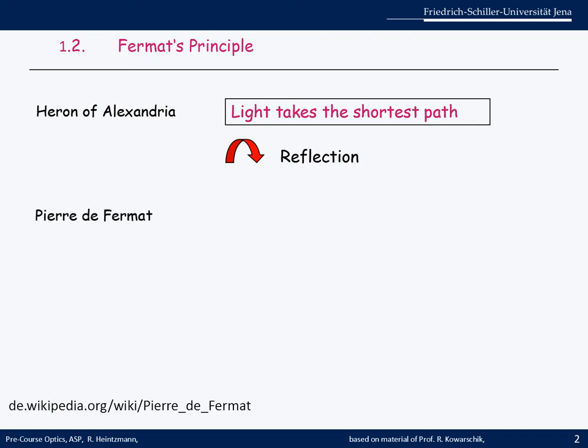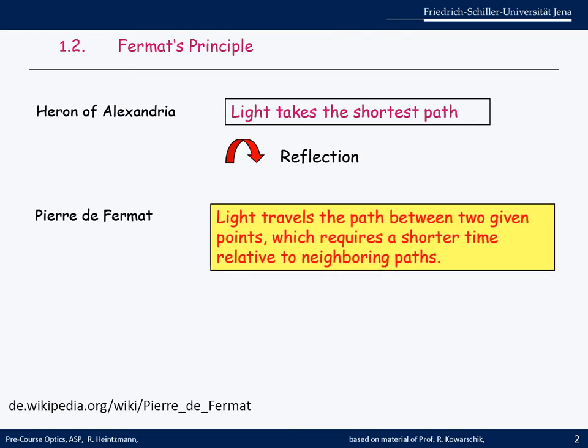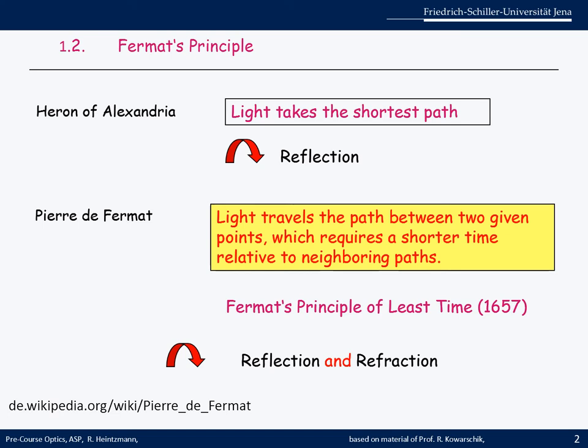Pierre de Fermat made this more precise by stating that light travels the path between two given points which requires the shortest time relative to the neighboring path. So time means the time of propagation that light takes. It can explain reflection and refraction at the same time, given that light travels slower in an optically dense medium.